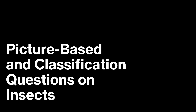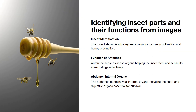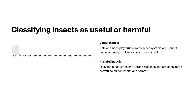We'll now identify insect parts and their functions from images and classify insects as either useful or harmful to humans. The insect shown here is a honeybee, important for pollination and honey production. The antennae act as sense organs to help the insect feel its environment. The abdomen contains vital organs like the heart and digestive system. Some insects are useful, like ants and bees, which help with pollination and pest control. Others, like flies and mosquitoes, are harmful because they can spread diseases.